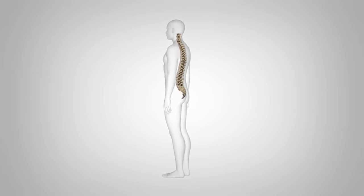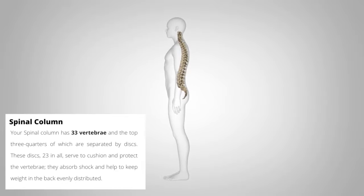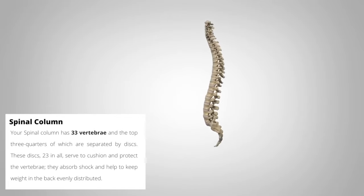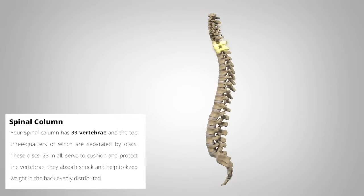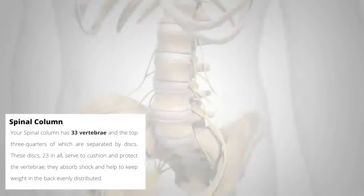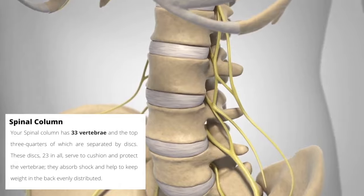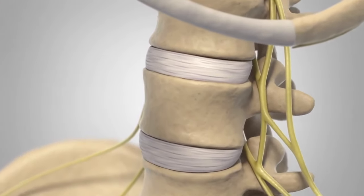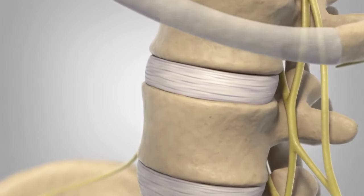Your spinal column has 33 vertebrae and the top three-quarters of which are separated by discs. These discs, 23 in all, serve to cushion and protect the vertebrae. They absorb shock and help to keep the weight in the back evenly distributed.